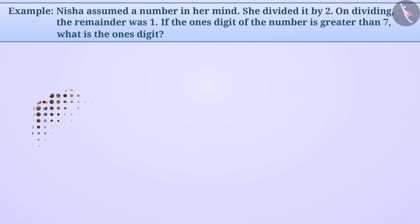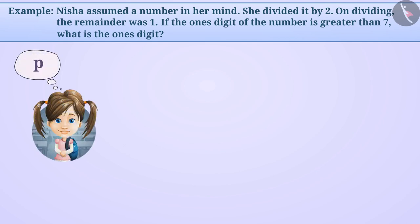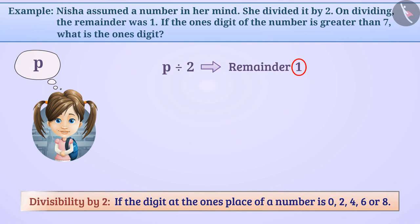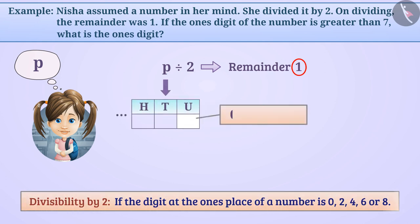Suppose Nisha took the number P in her mind. The remainder obtained from the division P divided by 2 is 1, which means that 2 does not divide P completely. From the divisibility rule for 2, we can say that 0, 2, 4, 6, or 8 cannot be at the 1's digit of P.